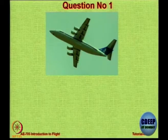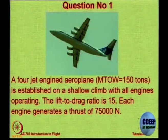This aircraft belongs to a flight training school. What do you see? What do you observe? Is this a jet engine aircraft? There are 4 engines. Are all 4 engines working? How do you know? So here is a 4-engine jet engine airplane with a maximum take-off weight of 150 tons and just after take-off the pilot establishes this aircraft in a very shallow climb, thankfully with all 4 engines working.